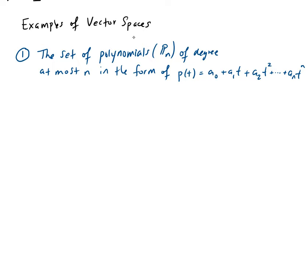The second is the set of all m by n matrices. M could be equal to n or vice versa. This not only talks about, this could also be for square matrices.